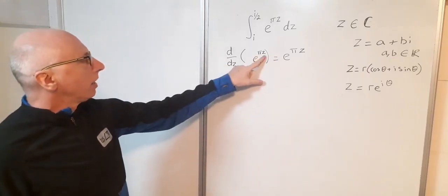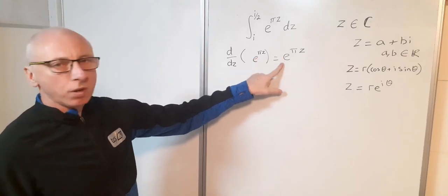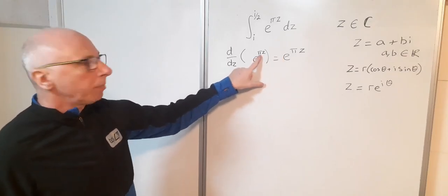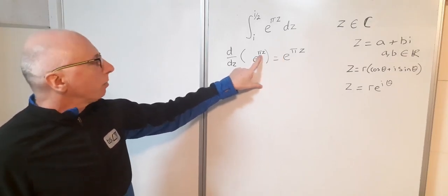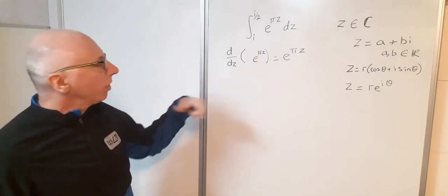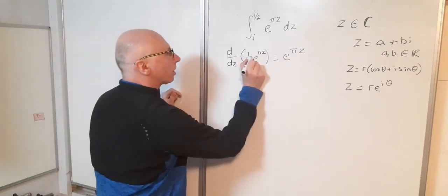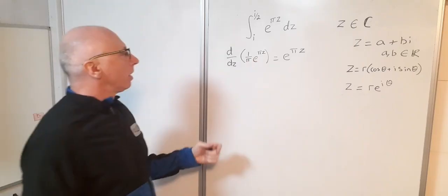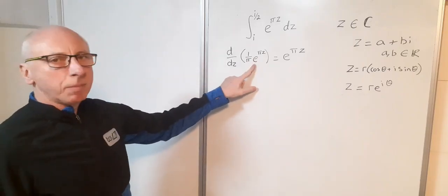Now e to the pi z, to get here I've got a 1. With that being a pi there, in order to multiply pi by something to get 1, I must have the reciprocal, so that's 1 over pi. So therefore this is my f of z.